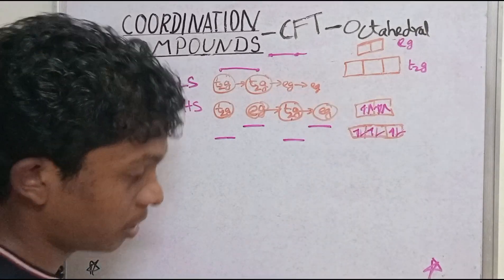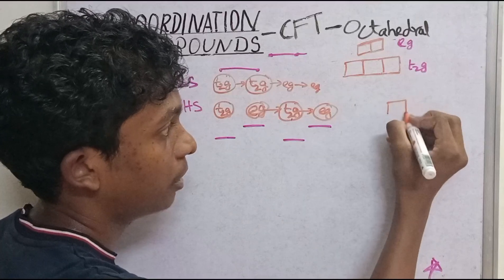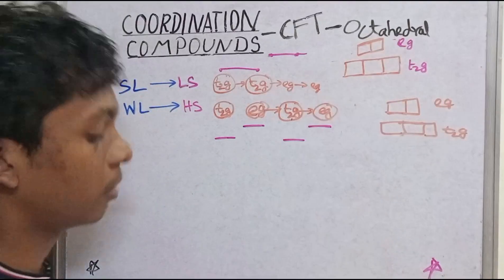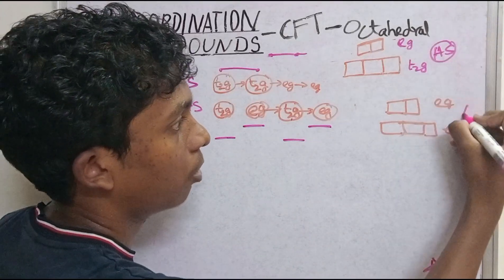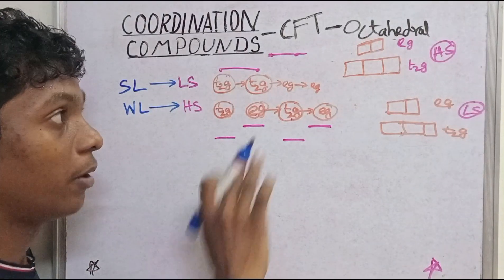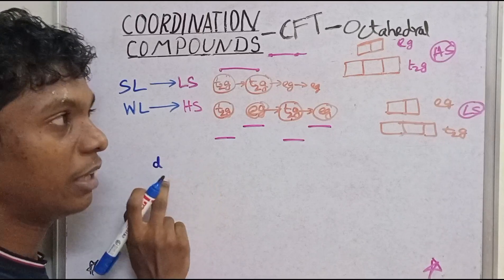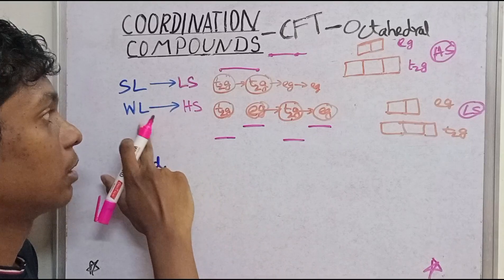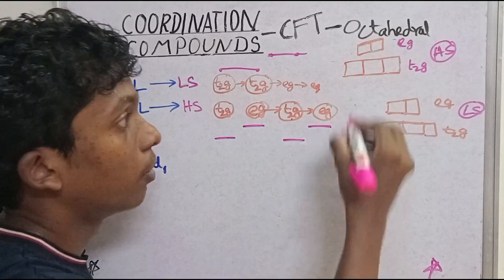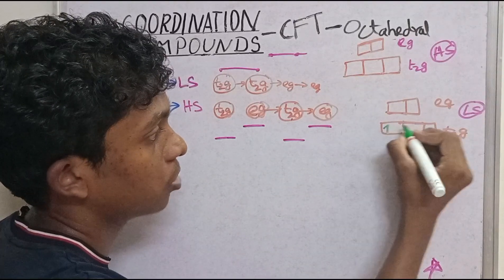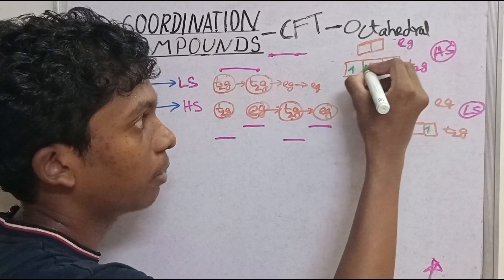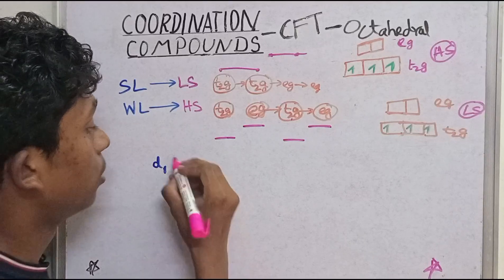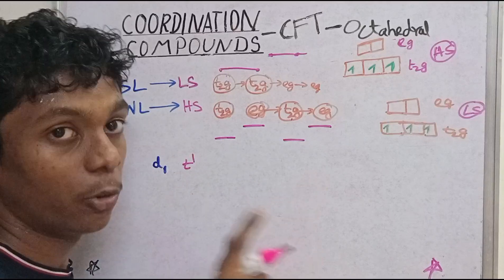Now let's head to the d-orbitals. We have these d-orbitals split into T2G and eg. This is the high spin and this is the low spin. Now we have one electron — D1 configuration. For D1, both high spin and low spin, we just fill one electron in T2G. So D1 gives T2G¹.